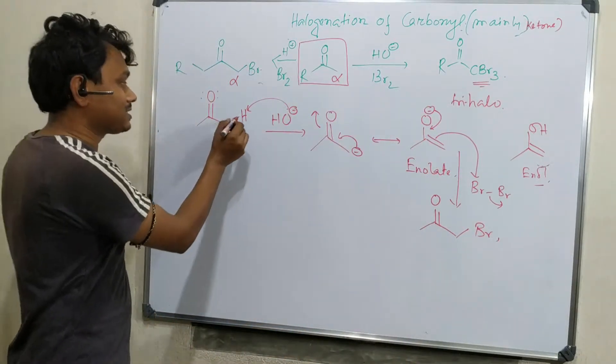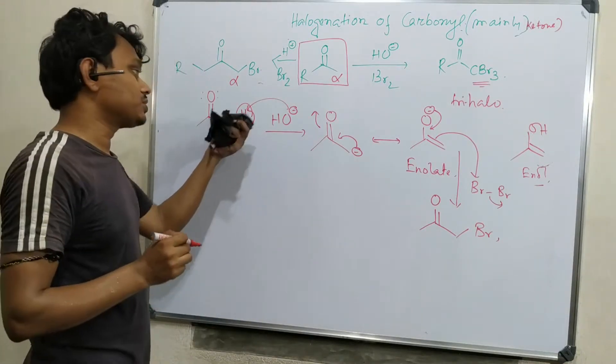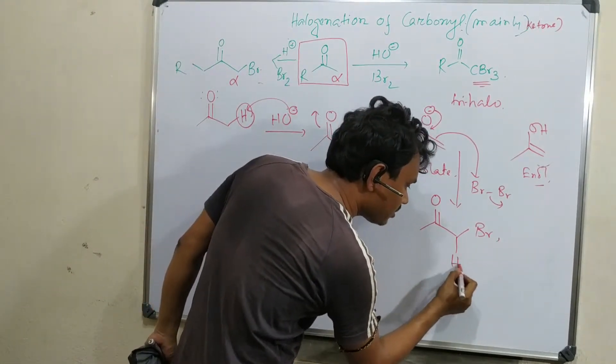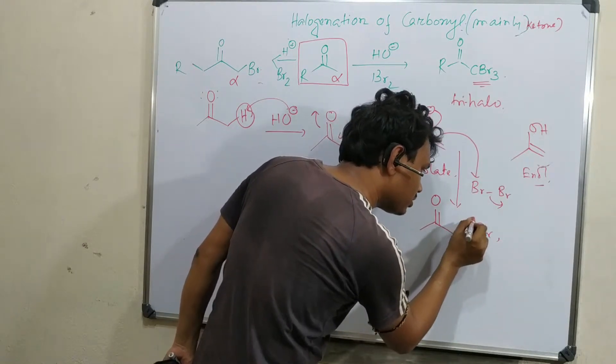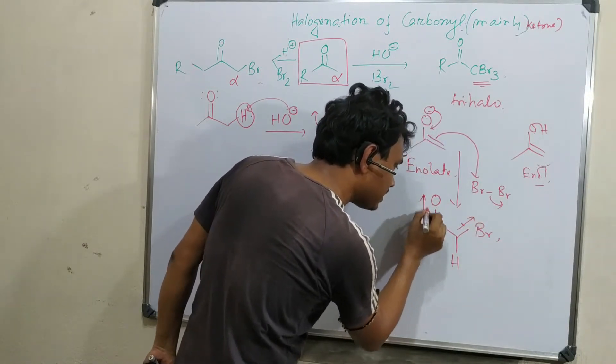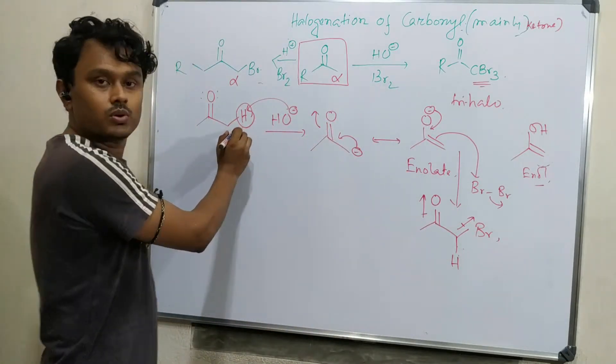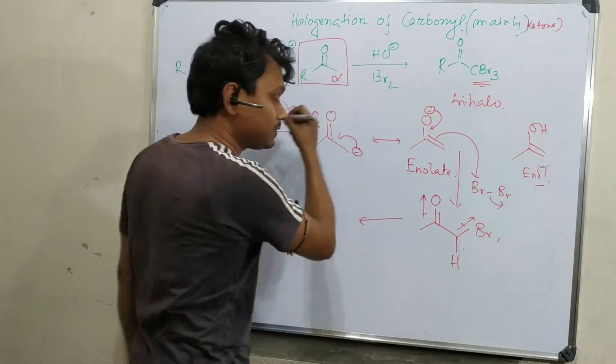Right now, you see the first step is proton abstraction. If I increase the acidity of this proton, then abstraction will be more. Right now here is another proton. This carbon is attached to one electron withdrawing group here and another is here. So this proton is more acidic compared to the unsubstituted proton.